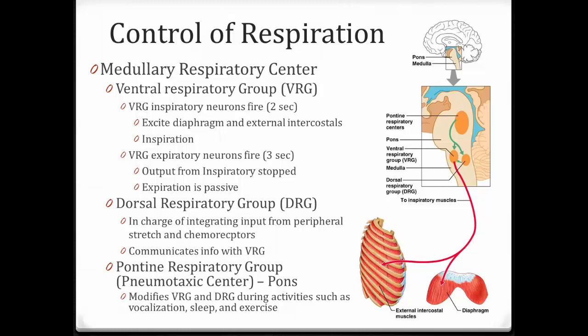Since there are no impulses going to the diaphragm and external intercostals, they relax and you exhale. Then the cycle repeats: two seconds of inspiratory neuron firing followed by three seconds of expiratory neurons inhibiting them, producing exhalation.